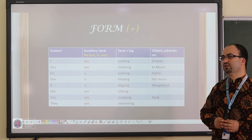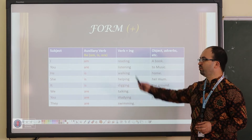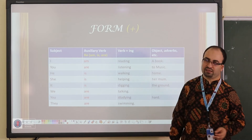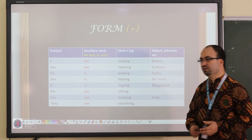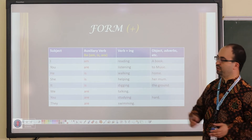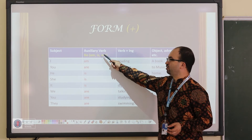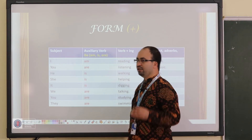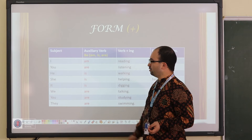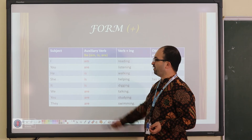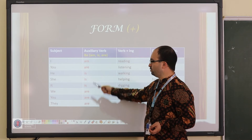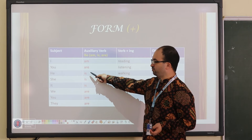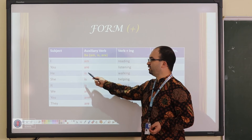Now let's look at how we form statements in present continuous tense. First we use the subject — pronouns like I, you, we, they, he, she, it, or any names like Chitra, Aditya, or whoever. Then we put the auxiliary verb 'be.' In present continuous tense it has three forms: 'am' is only for I, 'are' is used for you, we, and they, and 'is' is used for the third person singular — he, she, it.